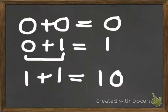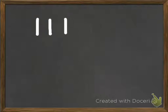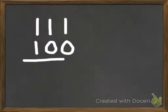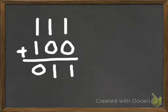It might take a little while to get used to adding in binary because most people are used to decimal, but let's look at a few more examples. Let's say we're adding the two binary numbers 111 and 100. In the first column we have a one added to zero, so that stays one. In the next column we have a one added to zero, that stays one as well. In the next column we have a one added to one, so it becomes zero with a one carried over.